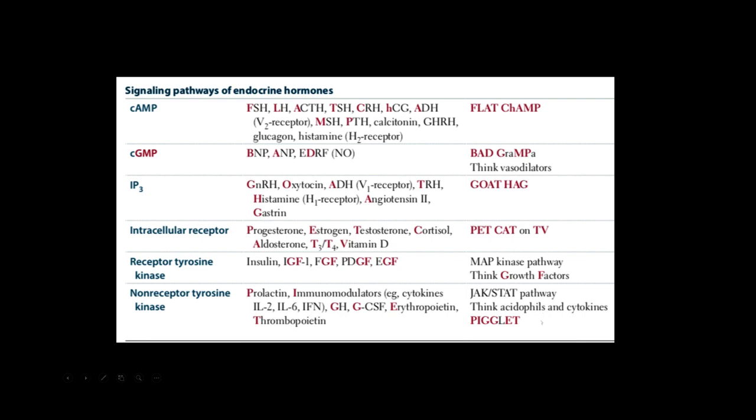This is a table from First Aid, so these are the classic mnemonics that people use to memorize which hormones act via which signaling pathways. I know you guys are probably thinking what the heck, this is so detailed. But if you plan on taking the USMLE, the USMLE is increasingly becoming more molecular biology oriented in their questions. You may be less likely to see a molecular biology question, but USMLE will ask these types of questions. So First Aid has a lot of good mnemonics about which hormones bind which receptors.